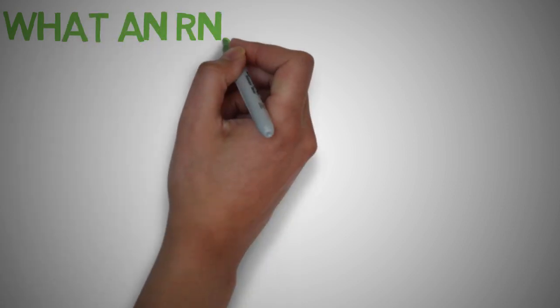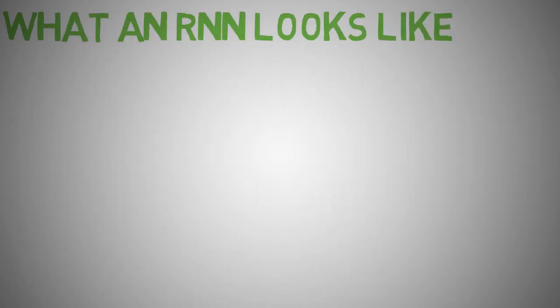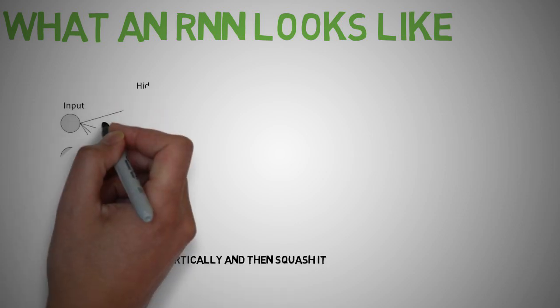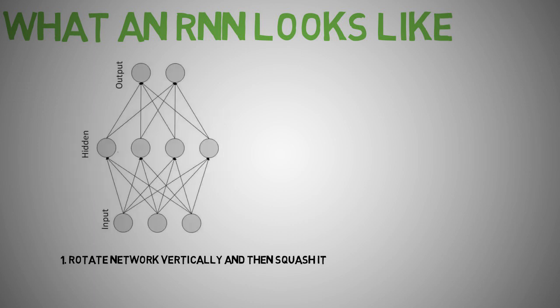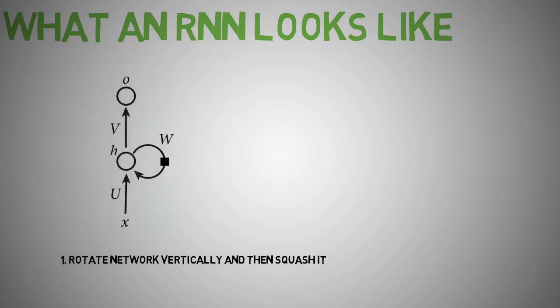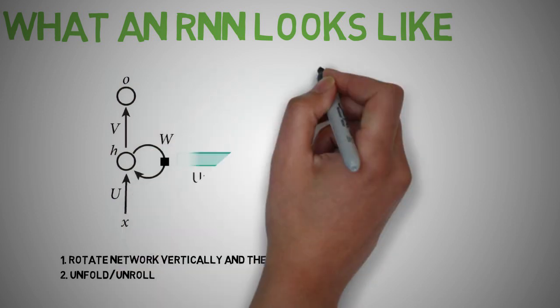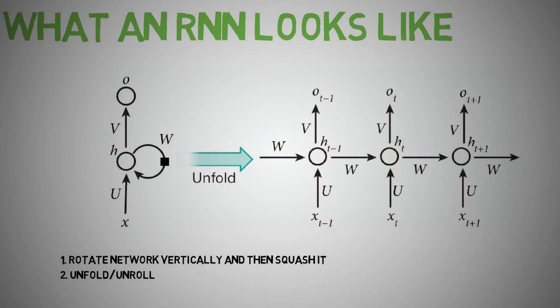So here is what a typical recurrent neural network looks like. So let's first imagine a normal artificial neural network and squash it. Or rather let's take a look at it from the top view. It should look like this. All the layers are still there but we represent it like this. Now we add a temporal element which is sort of like a feedback loop. We take this loop and unroll it or unfold it.